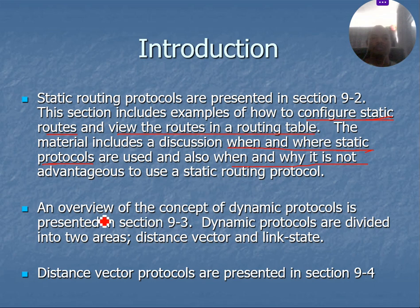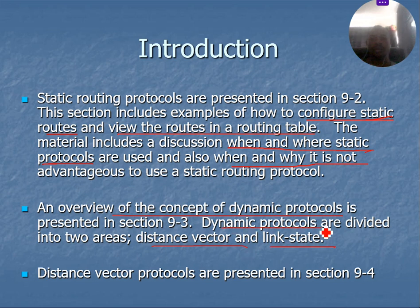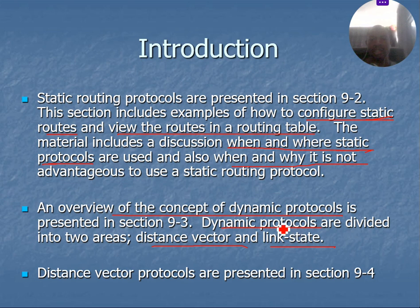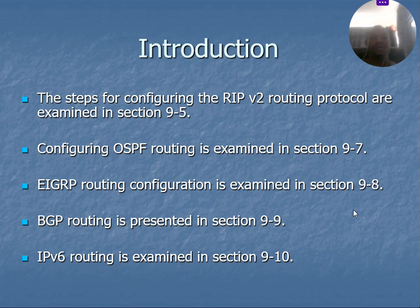In section three, we move to the concept of dynamic routing protocols. Dynamic routing protocols, as mentioned earlier, are divided into distance vector and link state routing protocols. We learn all of this in section three. Then in section four, we come into the distance vector protocol itself — not just as a type of dynamic routing protocol, but we study it in its own sub-chapter.